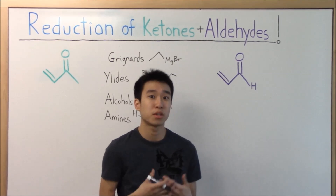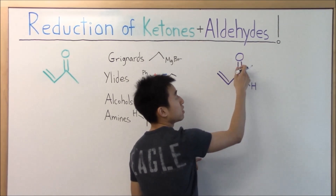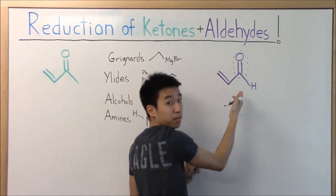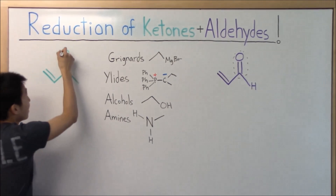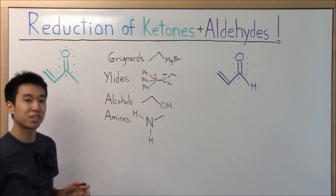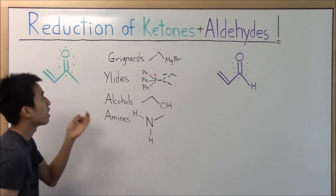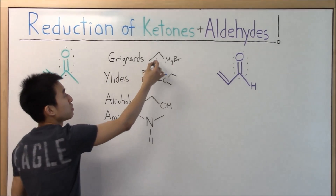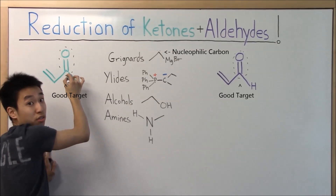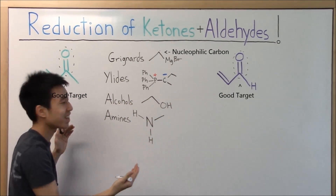By now you guys probably already know how to attack the carbonyl, which is just the carbon-oxygen double bond in your aldehydes and in your ketones. You guys have probably already learned how to use Grignard reagents, which have a nucleophilic carbon that can target the electron-deficient carbons of your carbonyls in ketones and aldehydes.